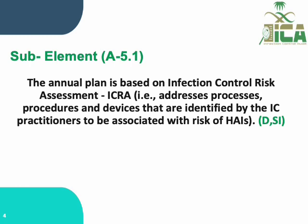The first sub-element is A5.1. The annual plan is based on infection control risk assessment, or ICRA — a very important abbreviation in our infection control program — which addresses the processes, procedures, and devices identified by infection control practitioners to be associated with the risk of HAIs. This sub-element will be audited by document and staff interview.